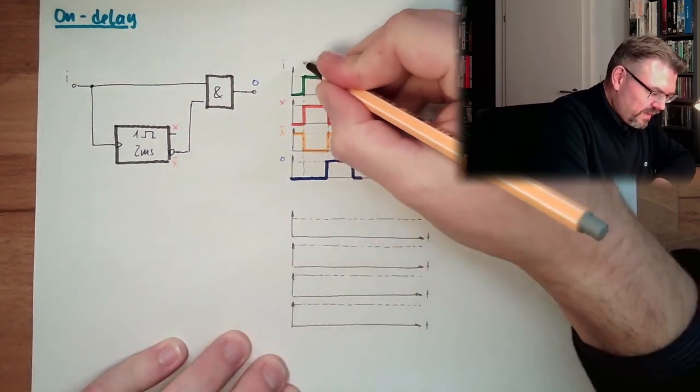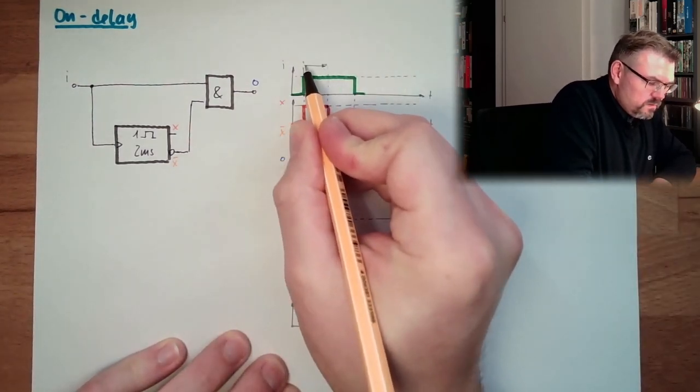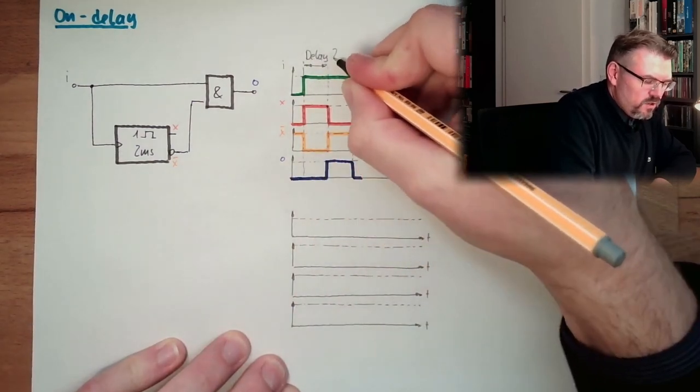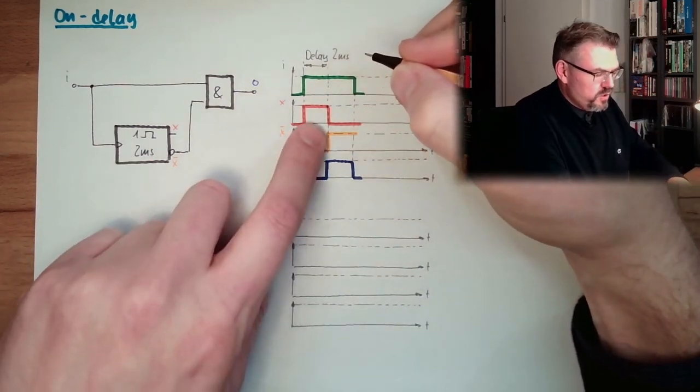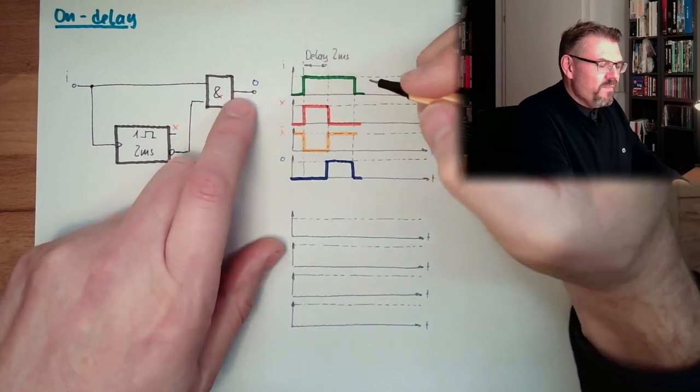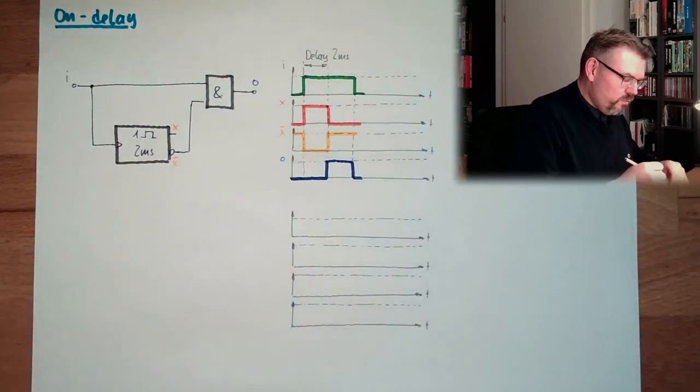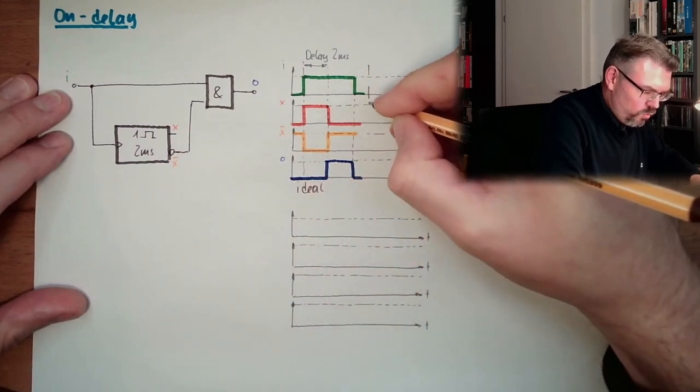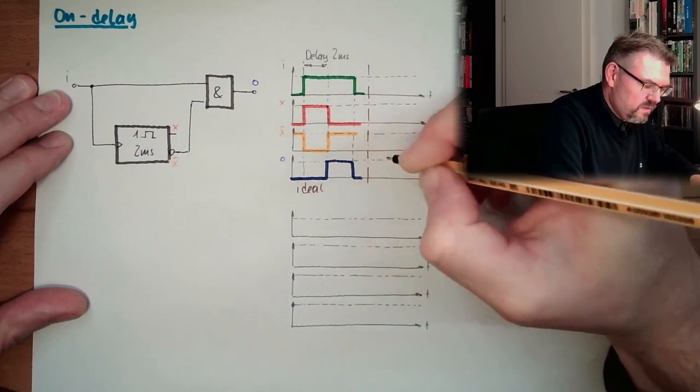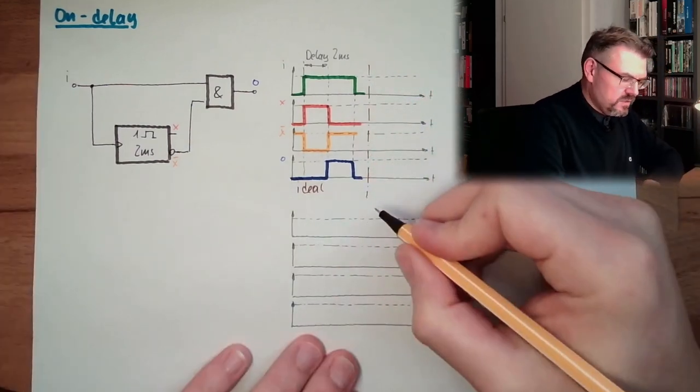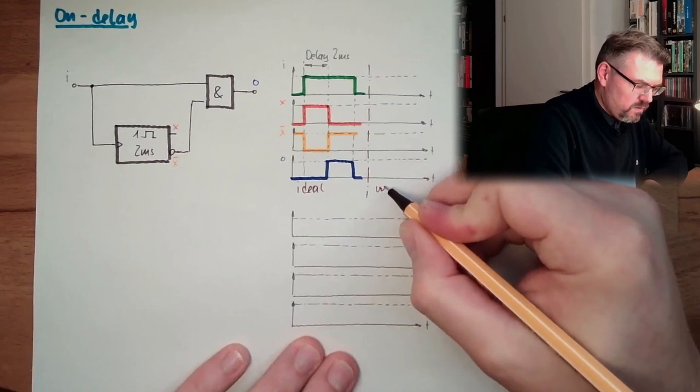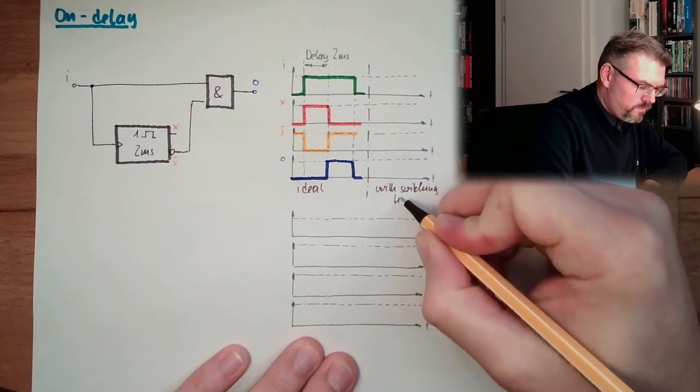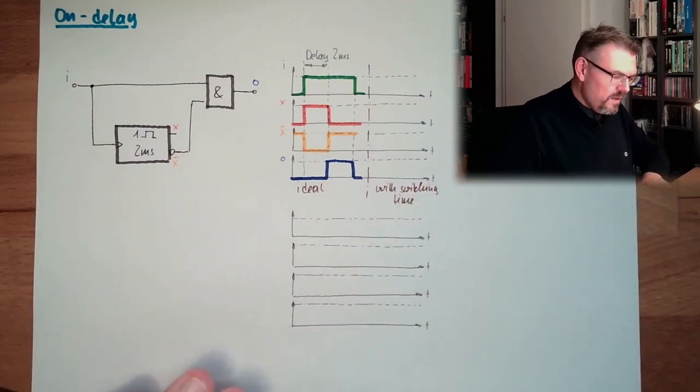And suddenly I have exactly reached what I want to have. Here is the delay time. This is the delay of the rising edge for 2 milliseconds. This would be if we have an ideal world. Now let's have a look at what is happening if we consider switching time.